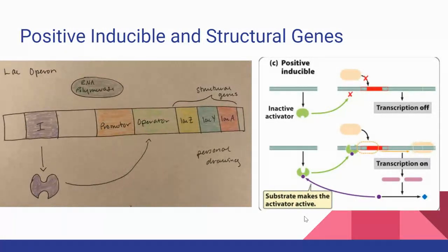In addition to this, a structural gene will encode proteins that are used in metabolism, or they can play a structural role in the cell. For example, there are three structural genes in the lac operon.